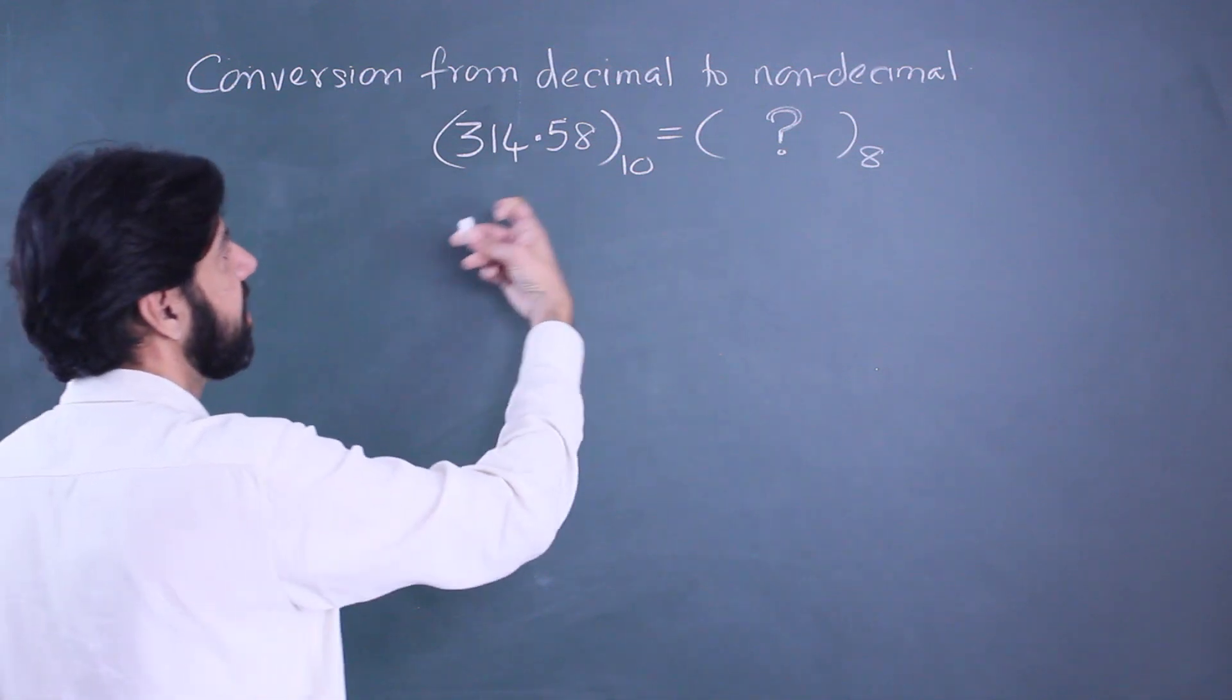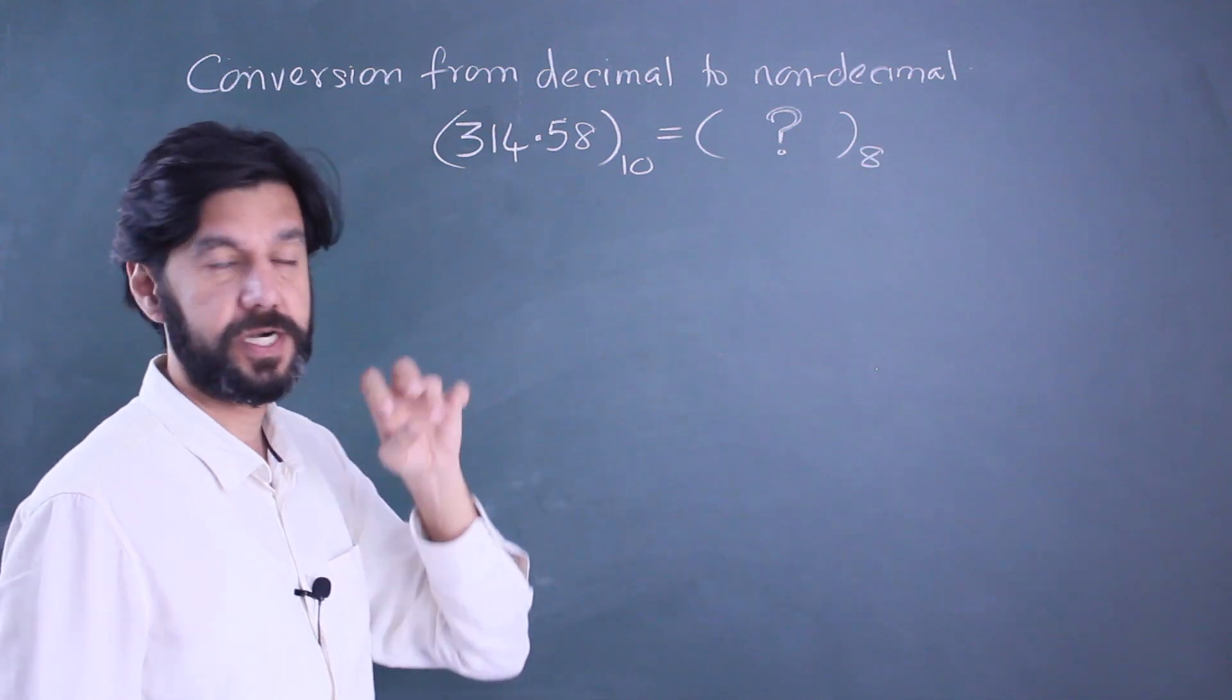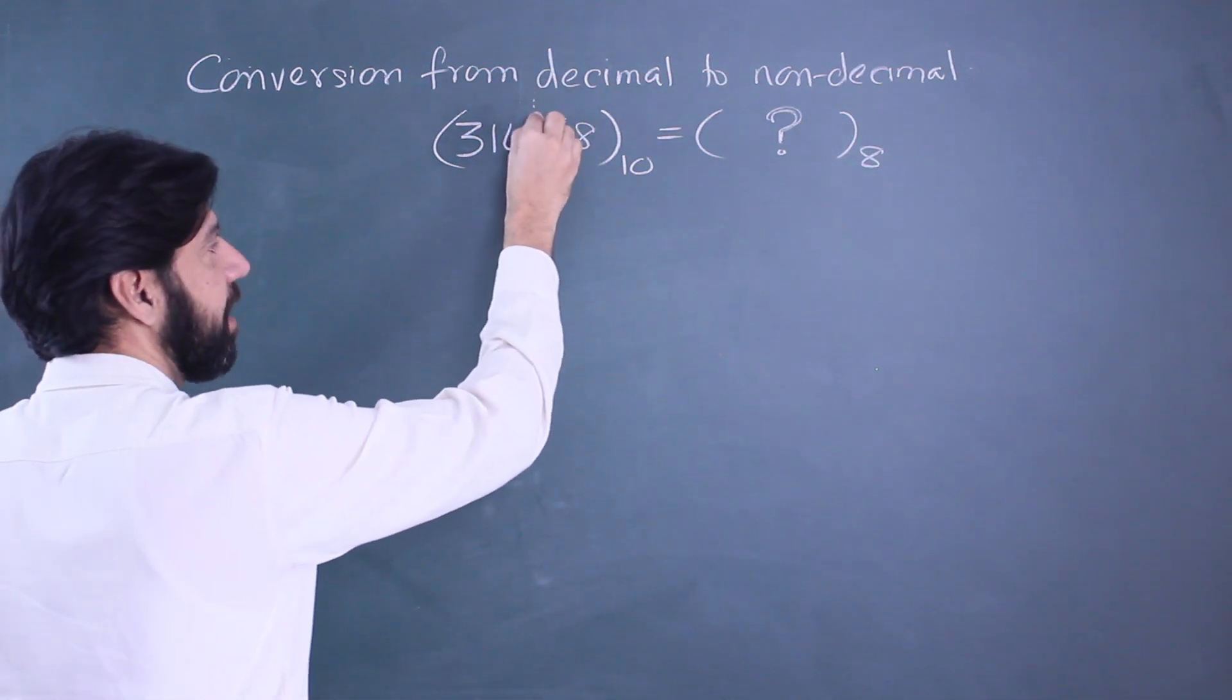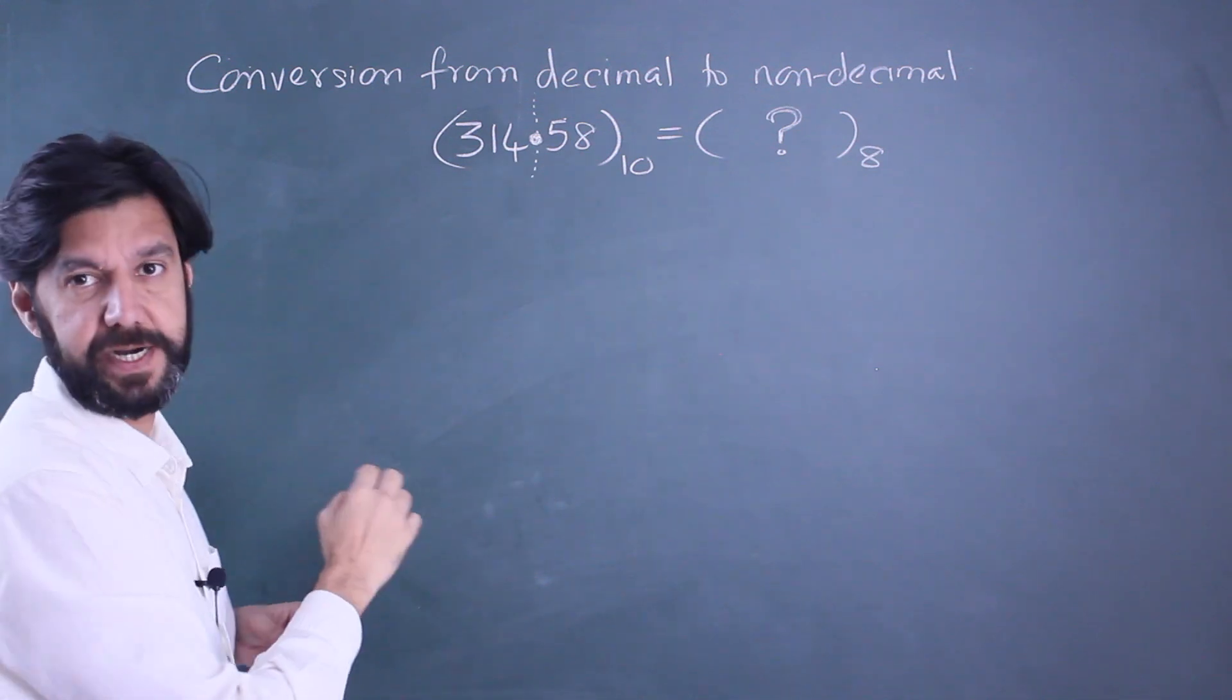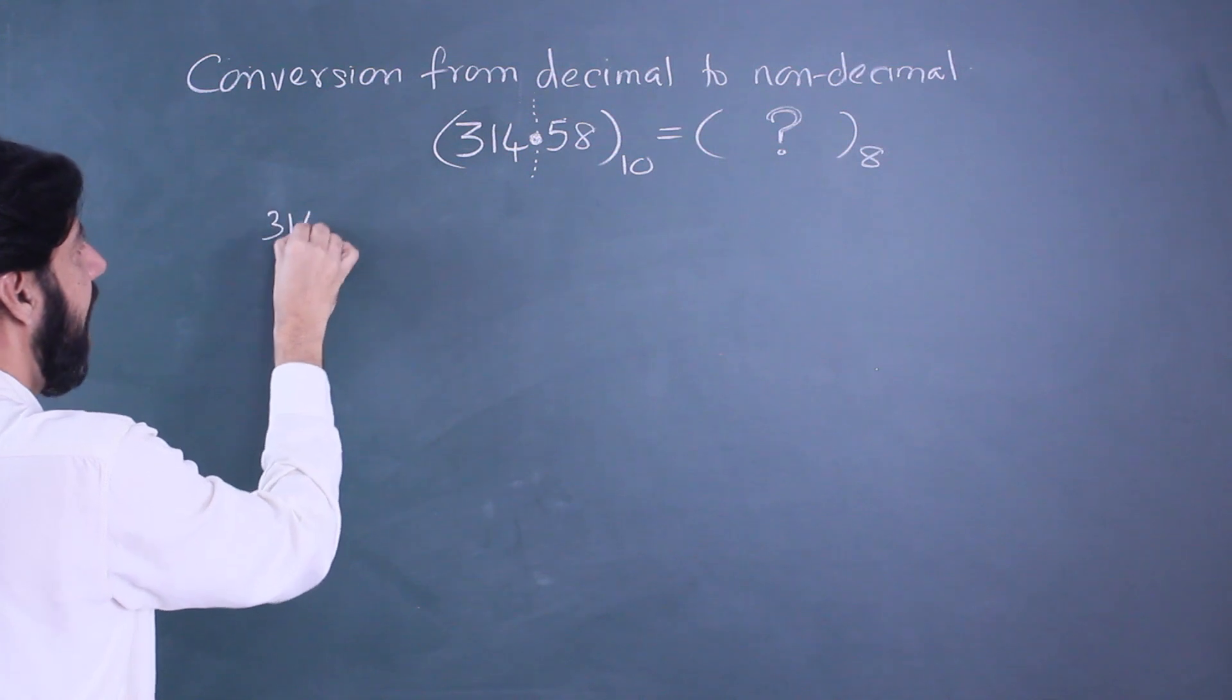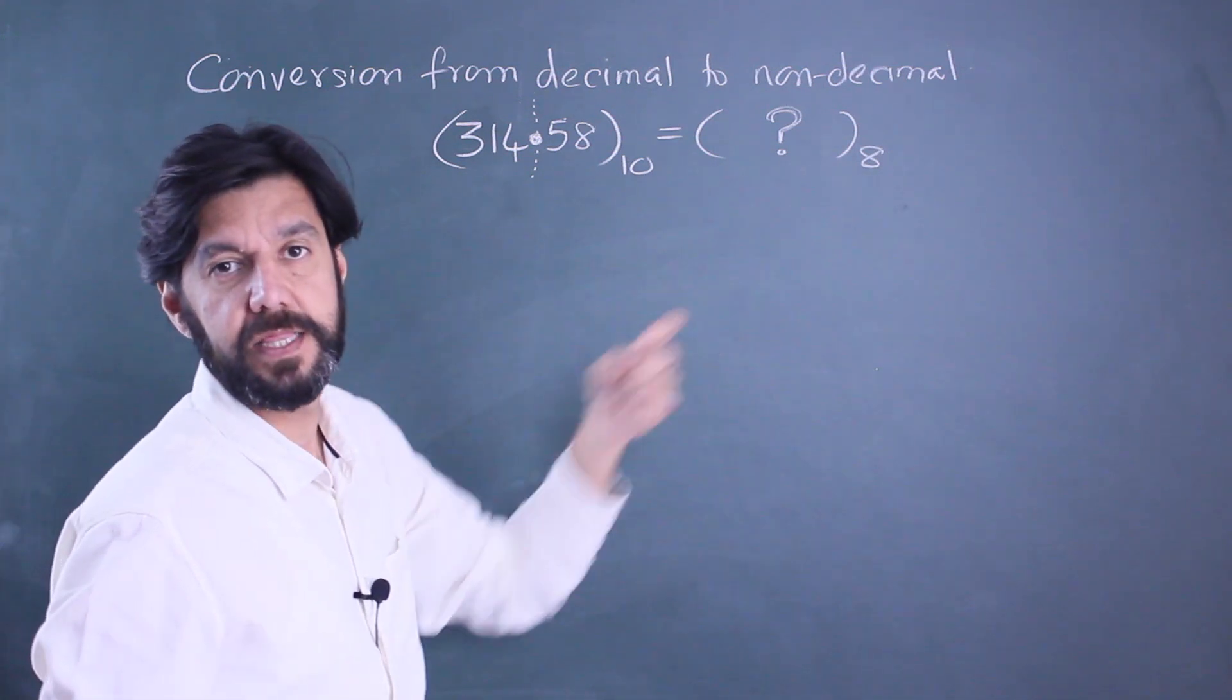Let's convert 314.58 of the decimal system into an octal. The integral part will be handled separately and the decimal part separately. So in the integral part we take 314 and we divide it by 8, the base that we want to convert to.